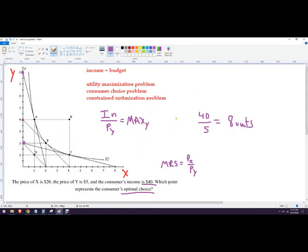So that means I have to be up here on this indifference curve. And then just to make sure, the price of X is 20, the budget is 40. What's the most we can afford? We can afford two units, so that'll be this point right here.